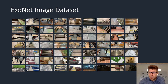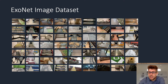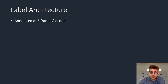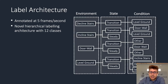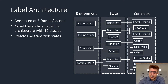We used a wearable RGB camera to collect images of indoor and outdoor real-world walking environments. This time we collected over 52 hours of video, amounting to approximately 5.6 million images. We uniquely collected these images across multiple seasons to account for different weathered surfaces like snow, grass, and multicolored leaves. We then manually annotated the images using a new hierarchical labeling architecture with 12 individual classes, including both steady and transition states.